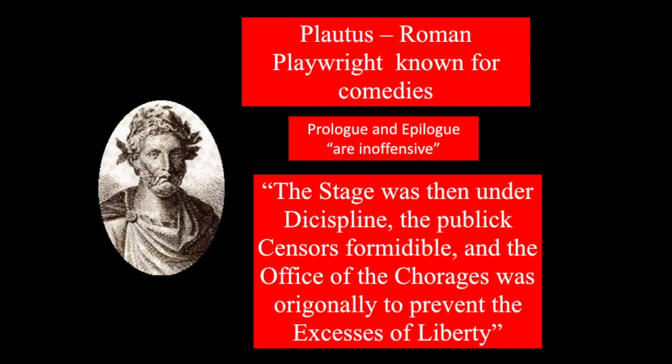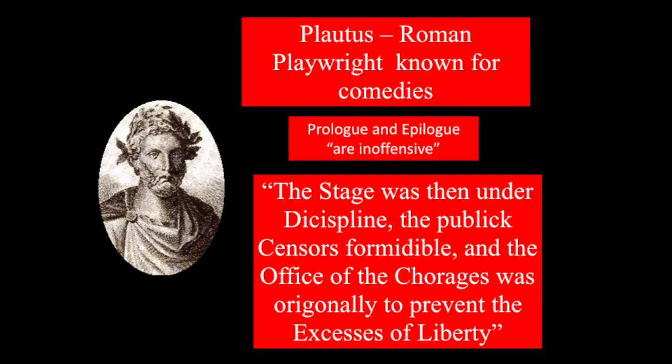The other thing Collier notices is disproportionate characters — the proportion of good over evil, just as we saw in the disproportion where the good is always less and the evil is always more. In these Restoration plays, evil characters outnumber good characters: there will be one virtuous damsel in distress and three licentious women always trying to dominate the virtuous one. Collier feels this improportion is not right. He gives the example of William Congreve's 'The Double Dealer,' where bad female characters outnumber the good character — again setting a wrong example in front of the public.